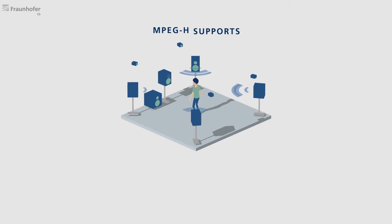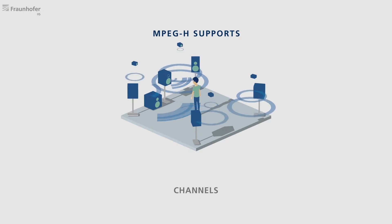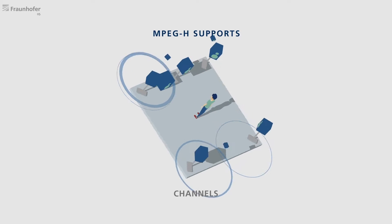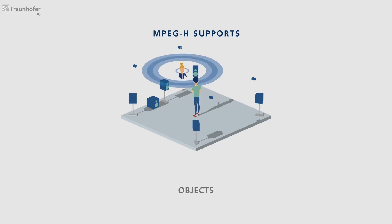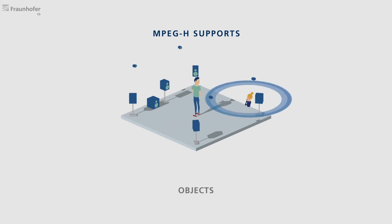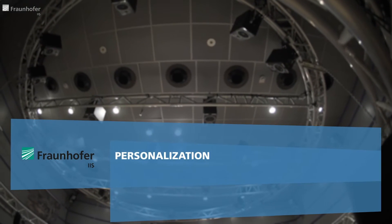In MPEG-H, immersive sound can be carried in different ways: as audio channels in which each loudspeaker signal is represented by an audio track, or as object-based audio in which audio tracks are enriched by a set of metadata describing, for example, the position of an object in space. A combination of audio channels and audio objects brings me to a unique feature of the MPEG-H Audio system – Personalization.